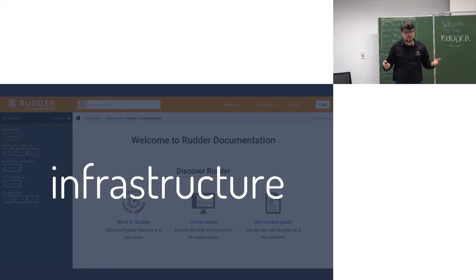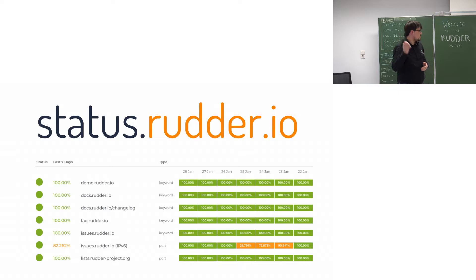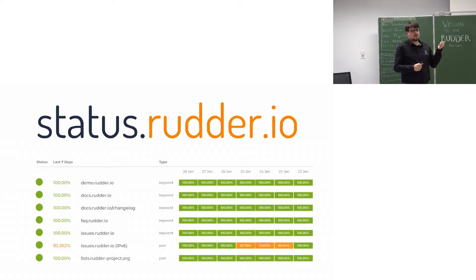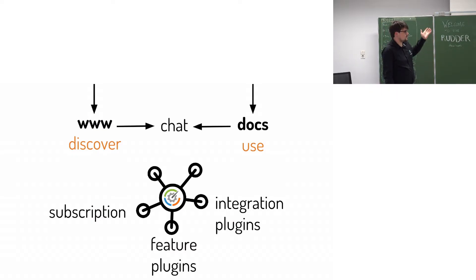We improved the tooling around Rudder with a new repository server that centralizes everything previously split across two or three locations. We also modernized infrastructure: adding IPv6 for all public services, HTTPS basically everywhere, and a public status page for more transparency and better monitoring of what really impacts users.